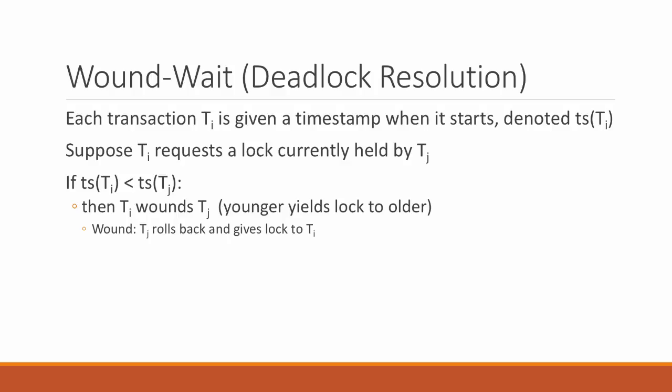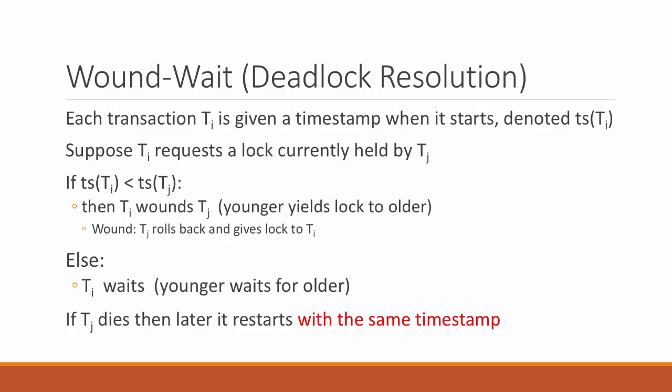If the transaction wanting the new lock is younger, the younger one waits for the older one to finish. So in wound-wait: older ones wound younger ones, whereas younger ones wait for older ones. An important caveat: when the younger one is wounded and killed, it rolls back but restarts with the same timestamp it had originally.